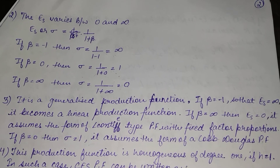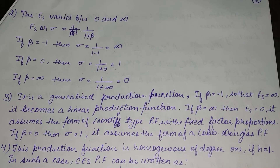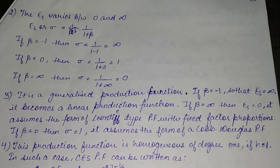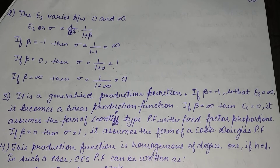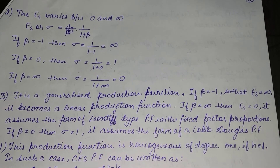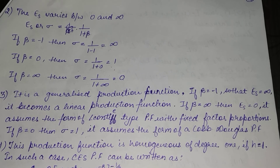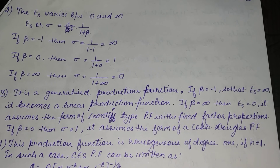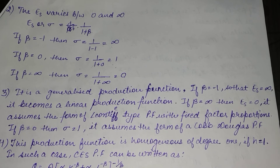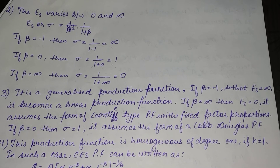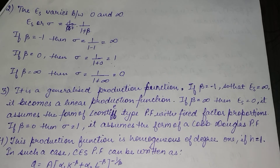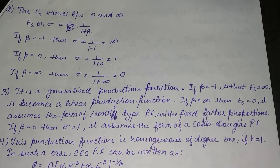The second property states that the elasticity of substitution value varies between 0 and infinity. From the first property, σ = 1/(1+β). Putting β = −1 gives σ = ∞; putting β = 0 gives σ = 1; and putting β = ∞ gives σ = 0. Therefore, the value of elasticity of substitution ranges between 0 and infinity.